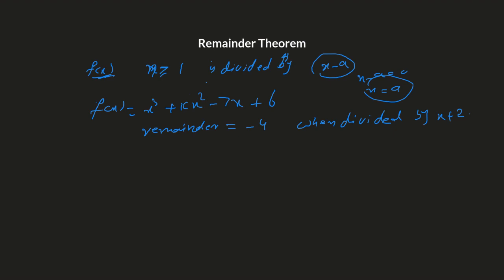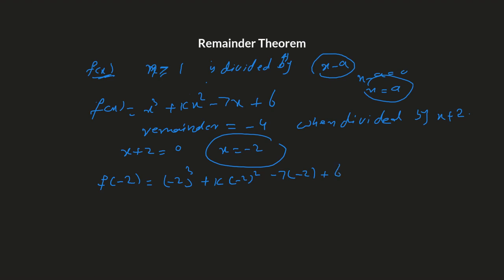So this f of x is divided by x plus 2 and the remainder is negative 4. Set x plus 2 equals 0, so x equals negative 2. Basically, f of negative 2 would be the remainder. Substitute negative 2 into the function: negative 2 cubed plus k times negative 2 squared minus 7 times negative 2 plus 6.